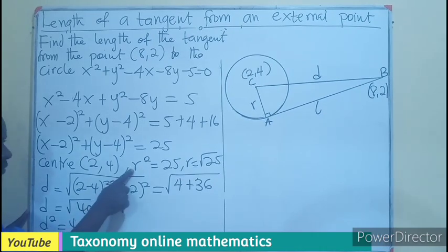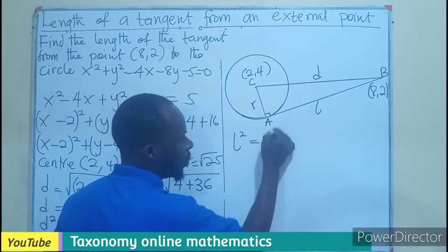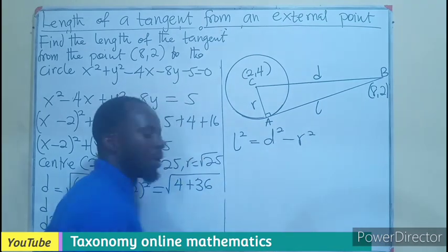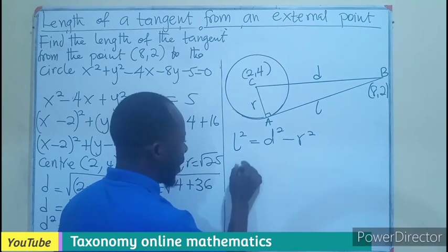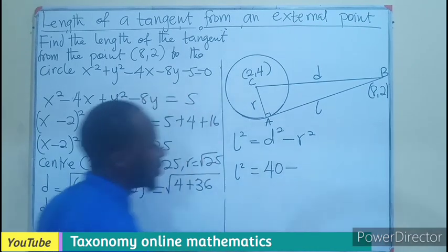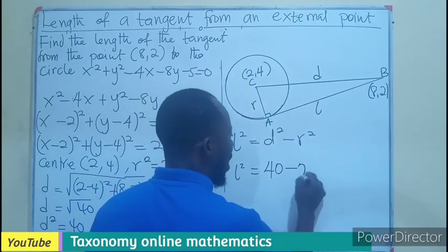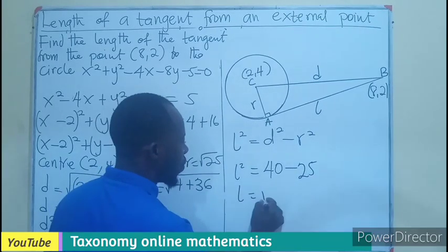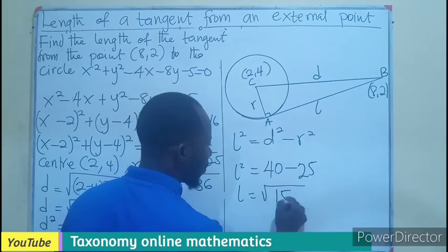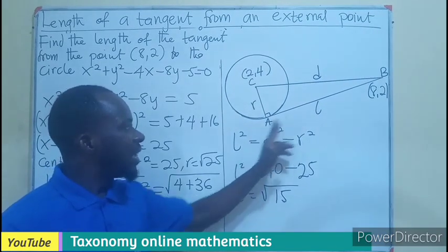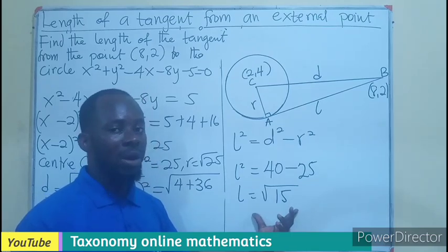Now the D squared is known, R squared is known. What are we looking for? By Pythagoras theorem, L squared equals D squared minus R squared. So we substitute the values of D squared and R squared in that. L squared equals D squared, which is 40, minus the R squared, which is 25. L will be equal to the square root of 15. So now, the length of the tangent here is going to be root 15.